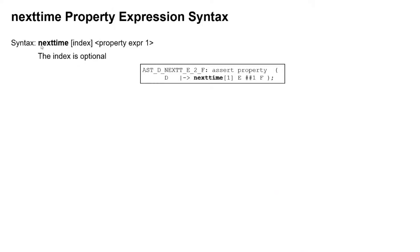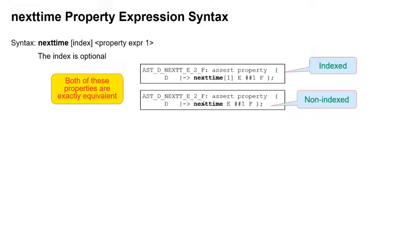So the syntax is like this. Nexttime is all one word, and optionally has some index here. So here's an example of usage where the index is one in this case. Now what is exactly equivalent to this is writing nexttime without an index, because nexttime without an index is the same as nexttime one. So those are both exactly equivalent. This is called non-indexed, this is called indexed.